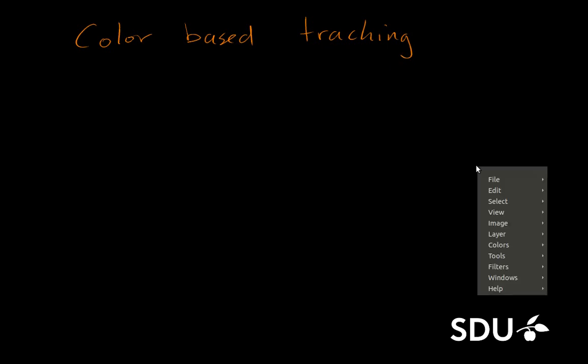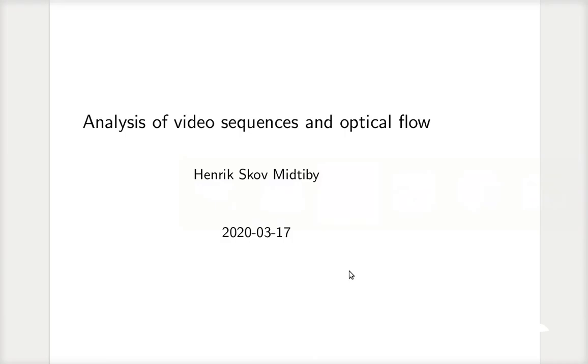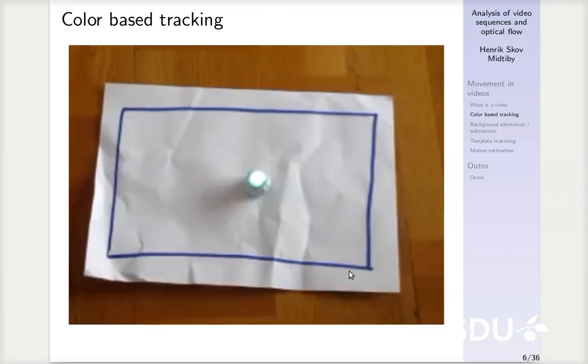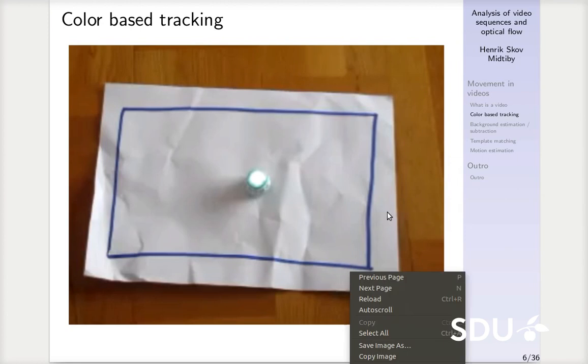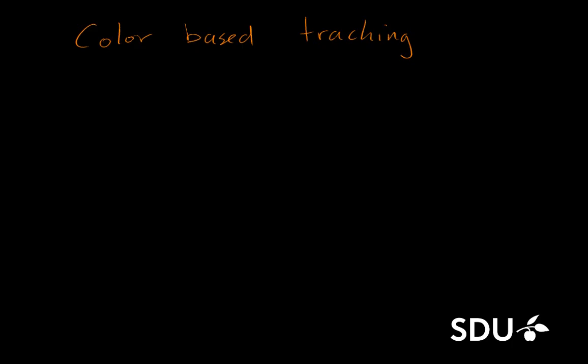And for that purpose, I have a few images to show you. So I'll just switch to those. So this is a plain image of some kind of piece of paper where a small robot is driving around. And this is part of a video where we have seen the movement of this robot. And to be able to track this, we want to analyze the certain colors of the object we want to track.